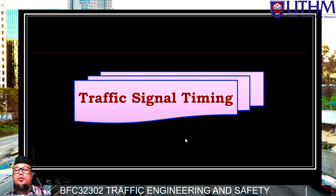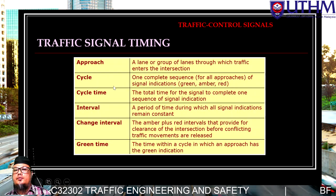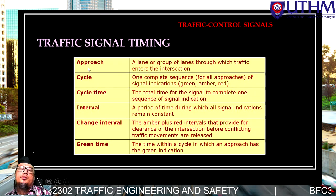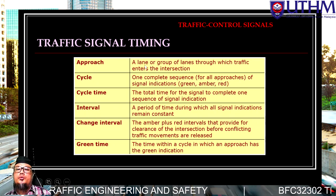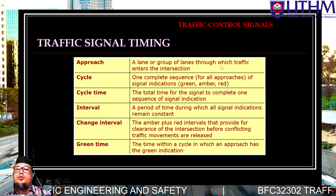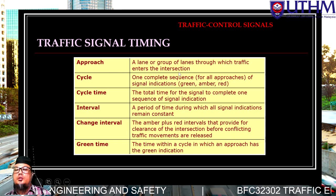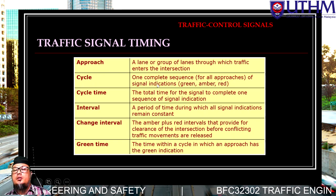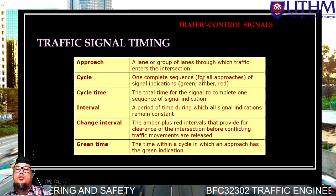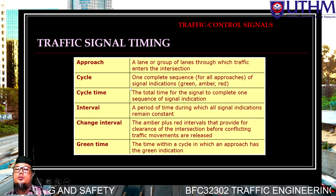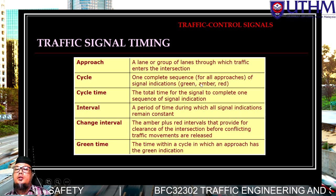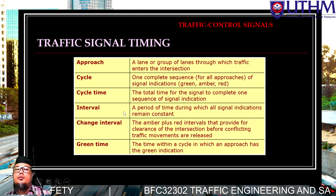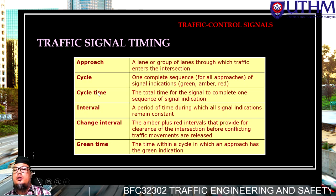We take a look at some definitions. First, 'approach' — a lane or road lane through which traffic enters an intersection. Next, 'cycle' — one complete sequence of signal indications, which includes green, amber, and red phases.